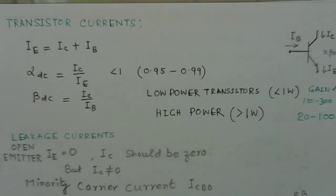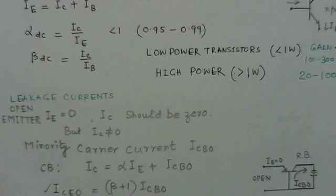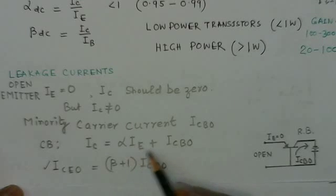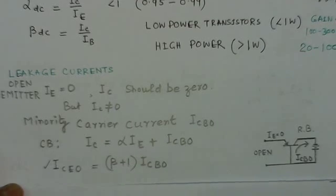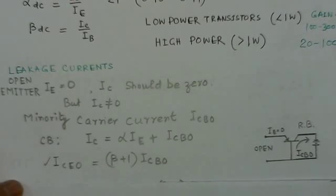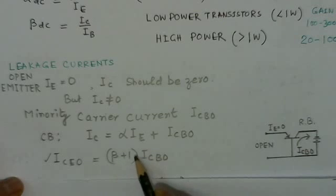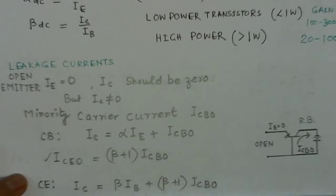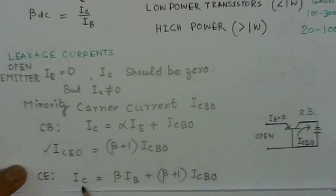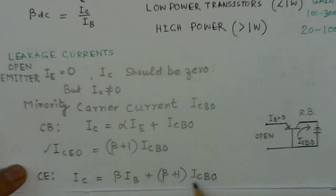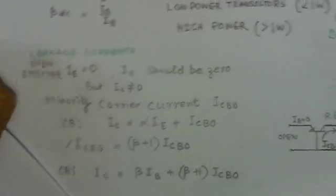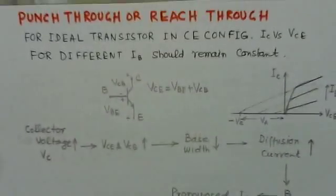For the common base circuit, the current is IC equals alpha IE plus ICBO. Now for the common emitter, the IC is beta plus 1 times ICBO related to common base leakage current. For the common emitter configuration of the transistor, this IC is given by beta IB, the normal current, plus the leakage current beta plus 1 times ICBO. This is the effect of leakage current. It is in the direction of the normal conventional current which flows in the transistor.